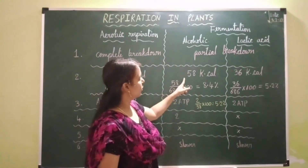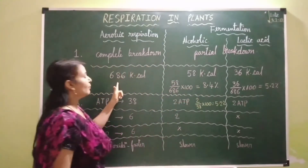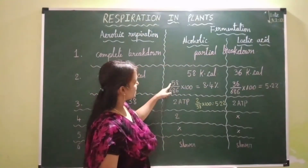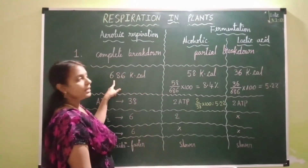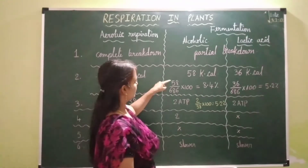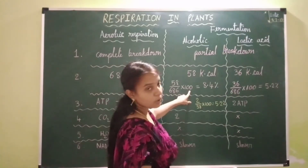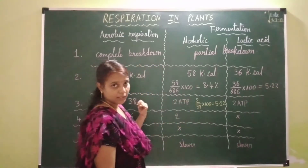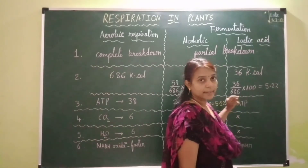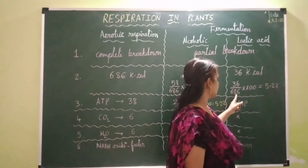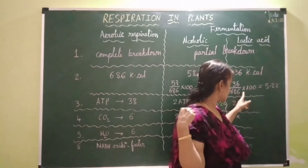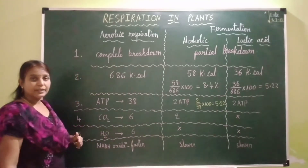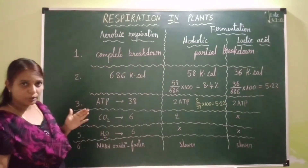Now let's compare the energy released during fermentation with respect to aerobic respiration. The energy released during alcoholic fermentation is 58 kilocalories versus 686 kilocalories for aerobic respiration, so 58 divided by 686 into 100 comes out to approximately 8.4 percent. For lactic acid fermentation, 36 divided by 686 into 100 comes out to approximately 5.2 percent of the energy released during aerobic respiration.